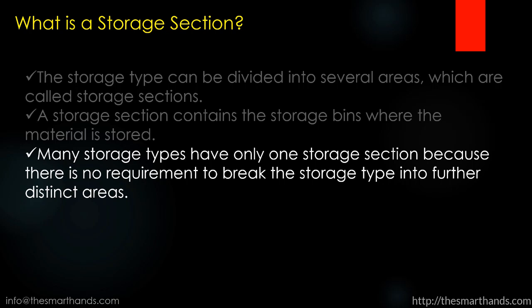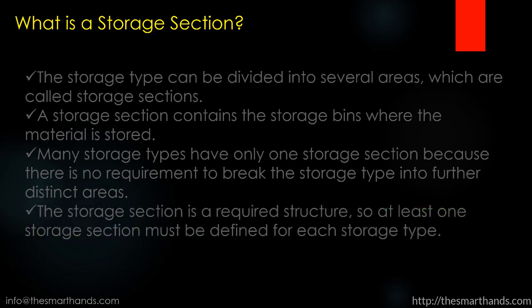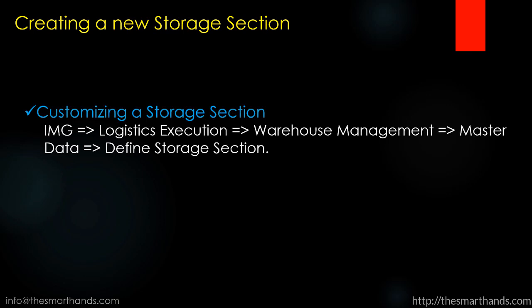We're going to see in the customizing that if we don't want to divide a storage type into different sections, then we just need to create one storage section — that means there's only one area and we don't want to divide the whole storage type further. Finally, the storage section is a required structure, so at least one storage section must be defined for each storage type. This is a very important point: at least one storage section must be defined for each storage type.